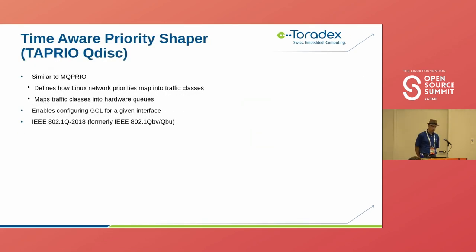The time-aware priority scheduler, TAPRIO, is similar to MQPRIO but defines how Linux network priorities map into traffic classes, and this mapping maps those classes to hardware queues. It enables configuring a GCL for a given interface, again as per IEEE 802.1Q-2018.